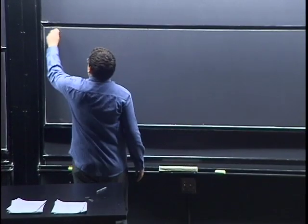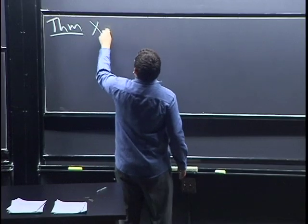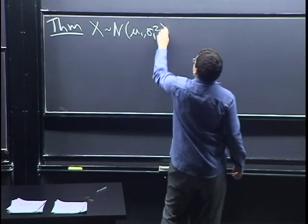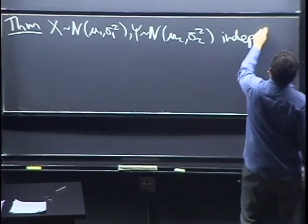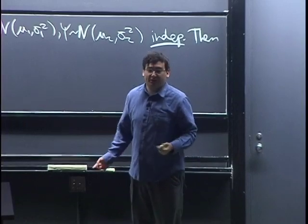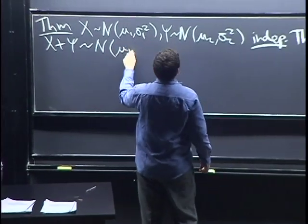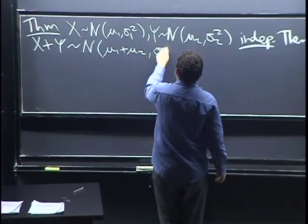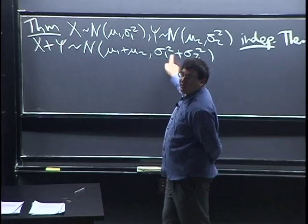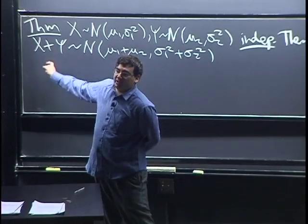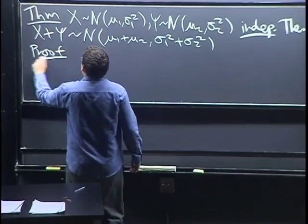Let's quickly verify what I said about the sum of normals — this is going to be easy now because we know MGFs. So just a little theorem: if X is Normal(μ₁, σ₁²) and Y is Normal(μ₂, σ₂²), and they're independent, then by linearity the means just add and the variances add. If we took a difference, we'd take the difference of means but still add the variances, not subtract, because X - Y is just X + (-Y). Let's prove this fact now.